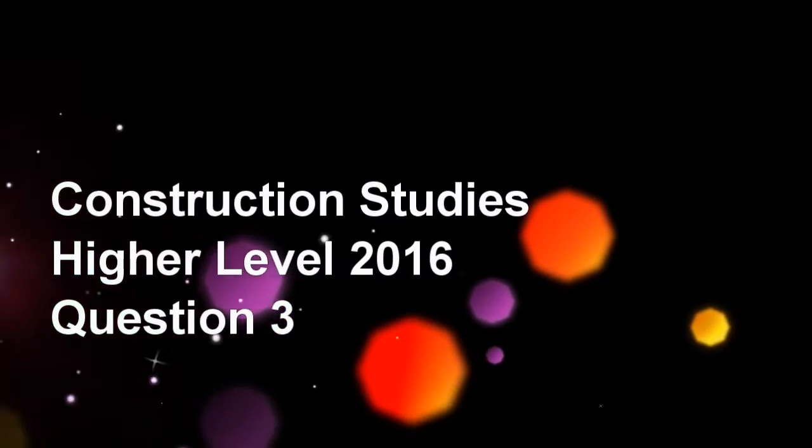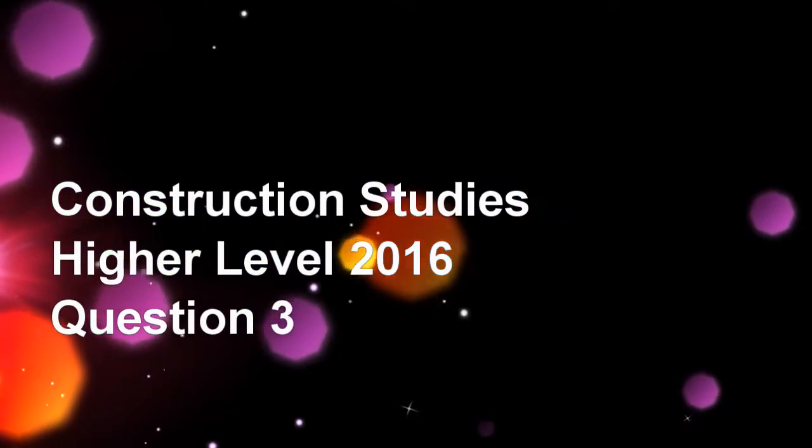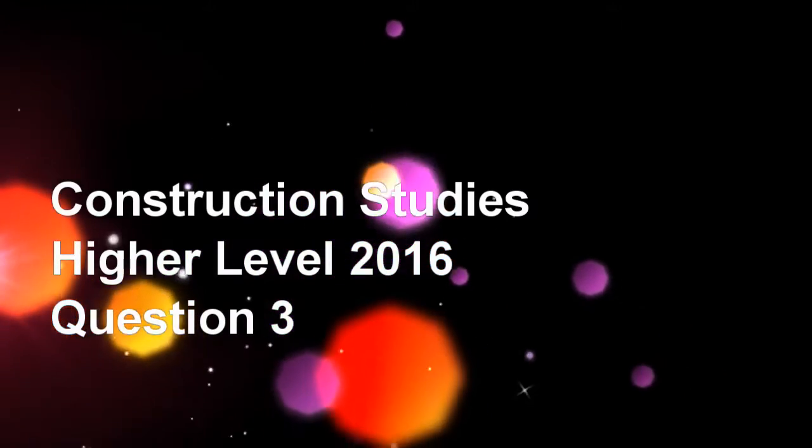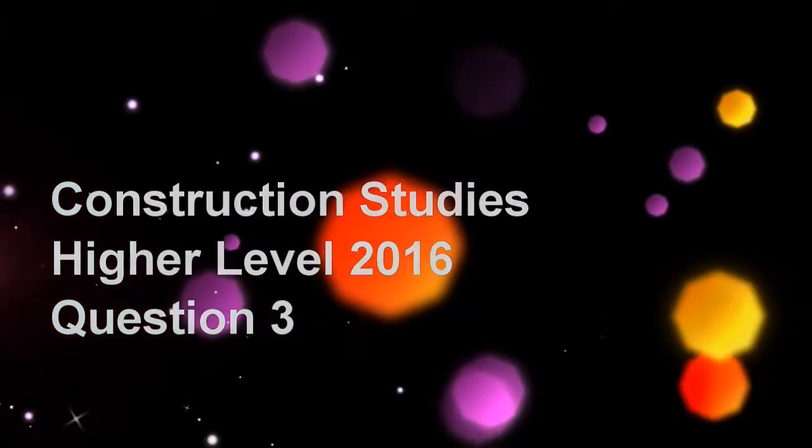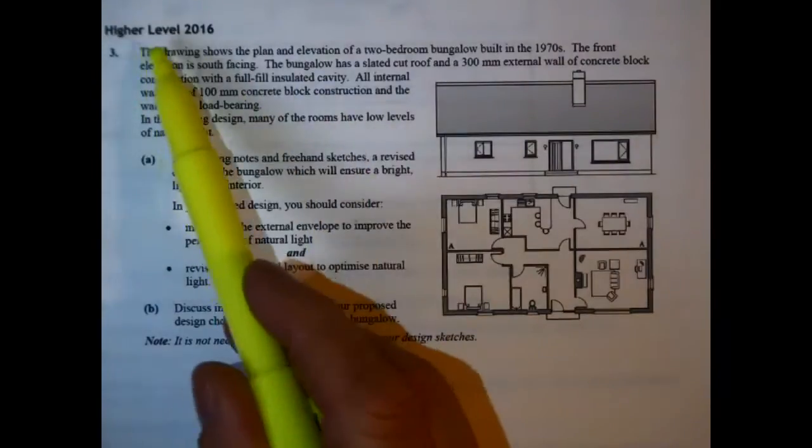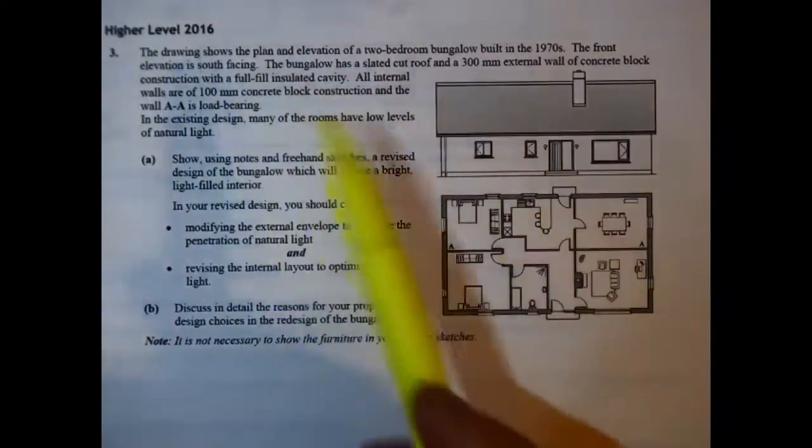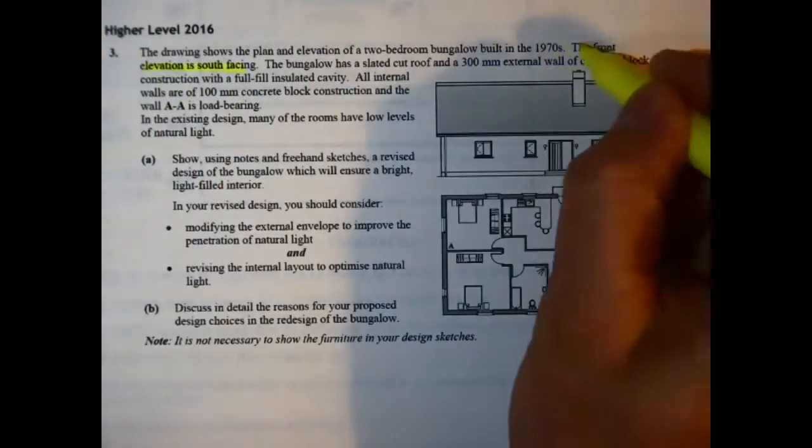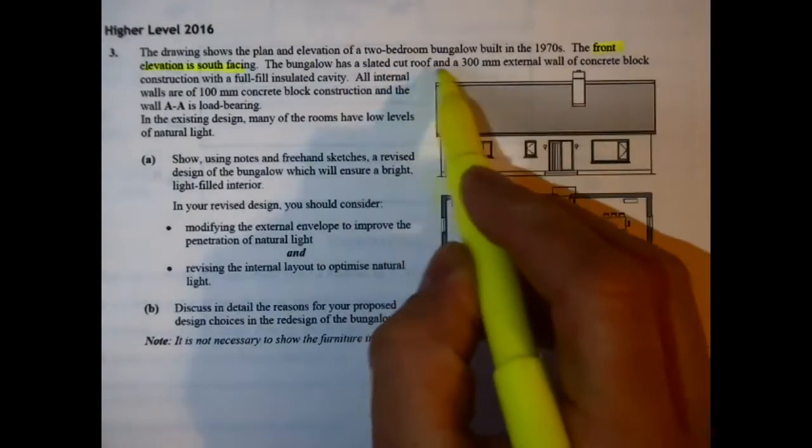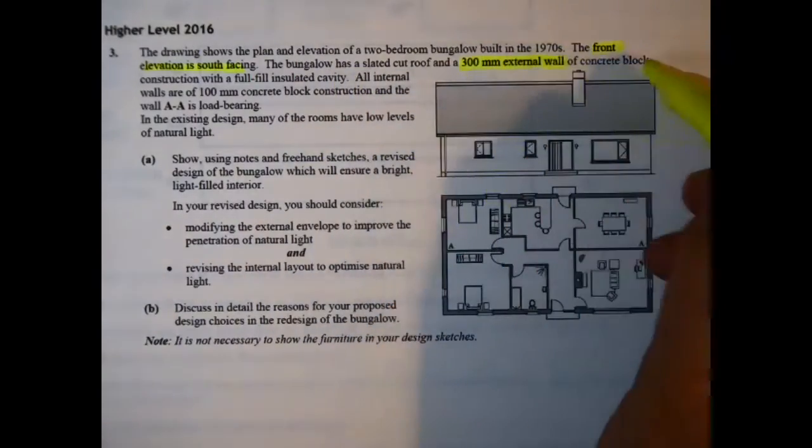Okay, in this video I'm going to take a look at Question 3 from the Higher Level 2016 paper. It's become a popular question among students - it's where you have to alter the design of a building in some regard. So in the question here it gives us some information that the front elevation is side facing with a 300 millimeter external concrete block wall and full insulated cavity.